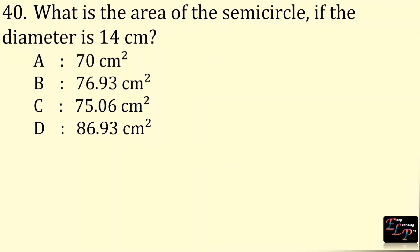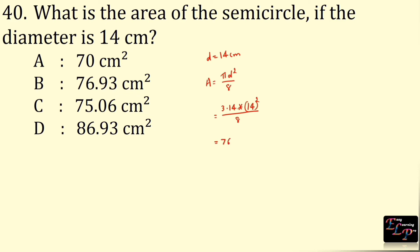What is the area of the semicircle if the diameter is 14 cm? Diameter is 14 cm. Area of a semicircle is πd² ÷ 8 = 3.14 × 14² ÷ 8 = 76.93 cm².